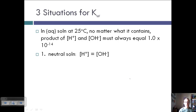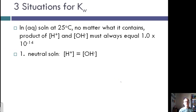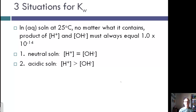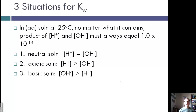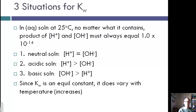There are three situations for Kw: a neutral solution where [H+] = [OH−] = 1 × 10⁻⁷; an acidic solution where [H+] > [OH−] but the product is still 1 × 10⁻¹⁴; and a basic solution where [OH−] > [H+] but the product remains 1 × 10⁻¹⁴. Since Kw is an equilibrium constant, it varies with temperature — as temperature increases, Kw increases.